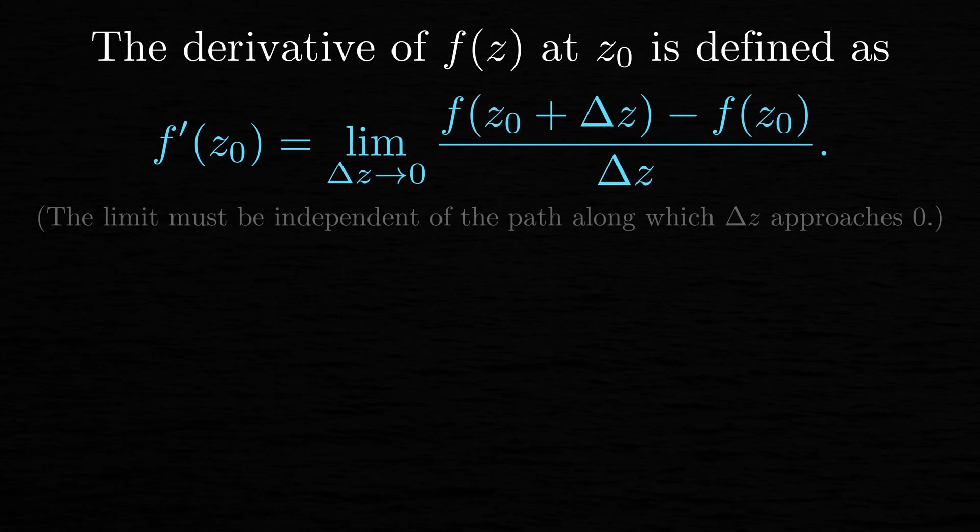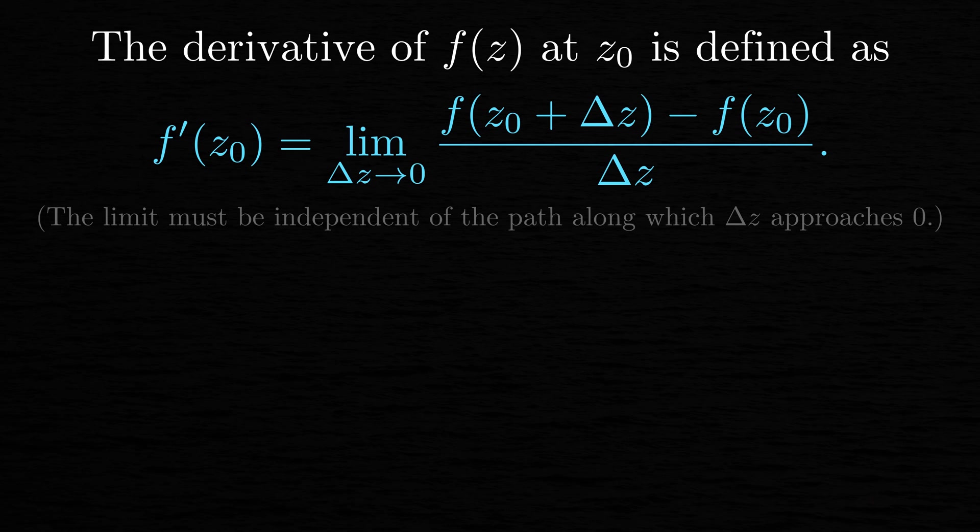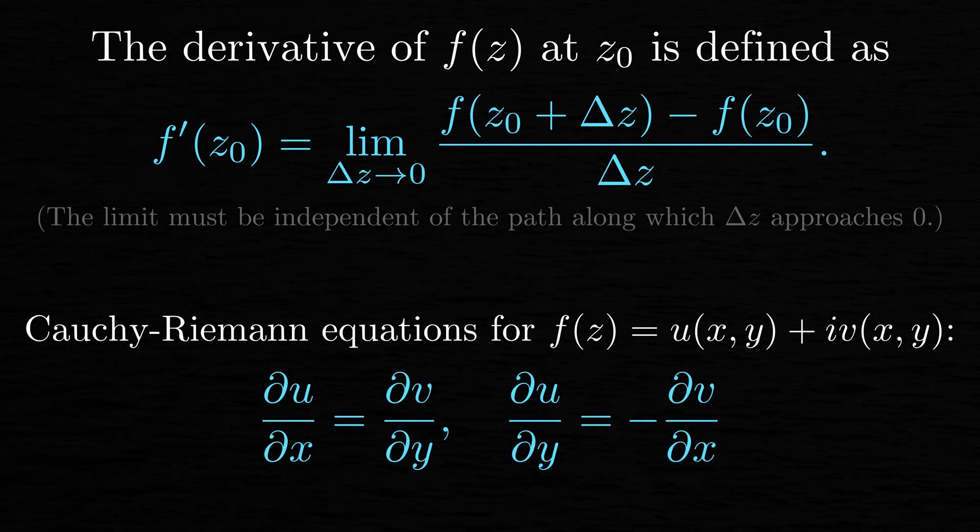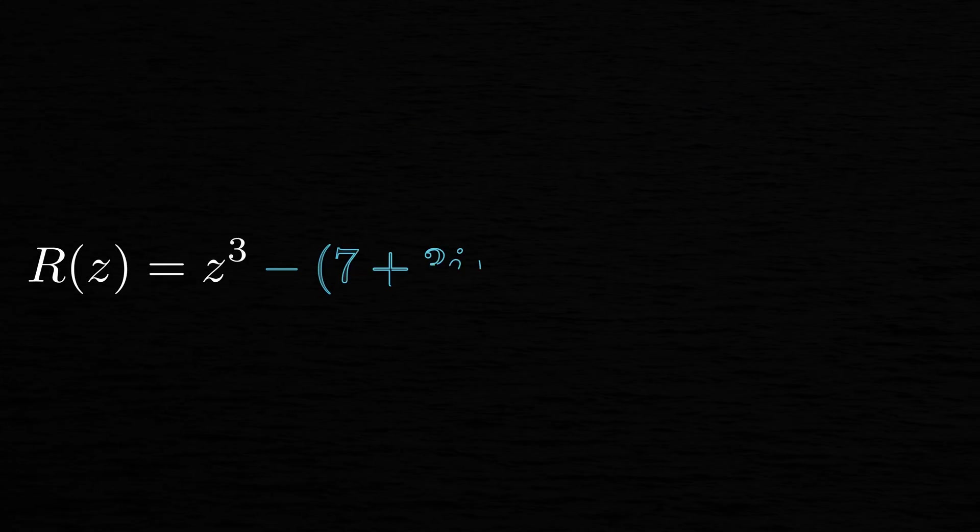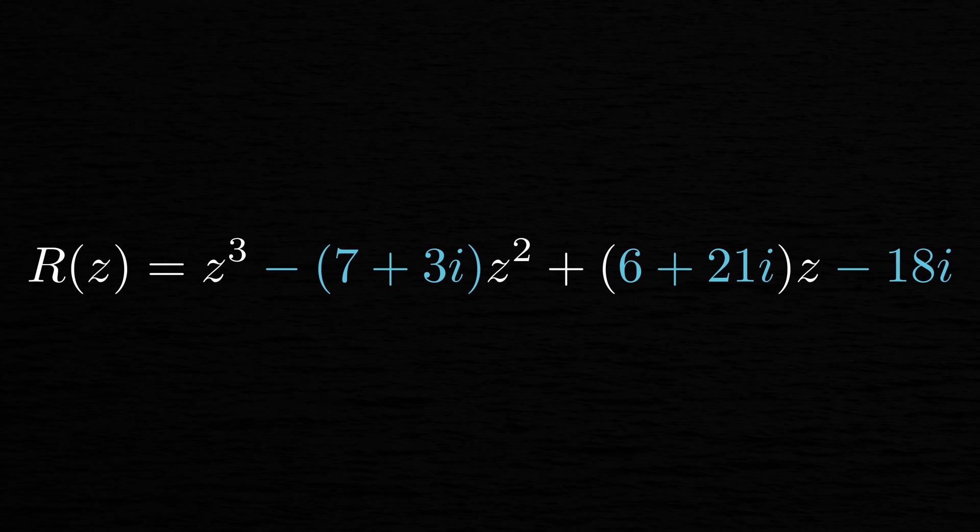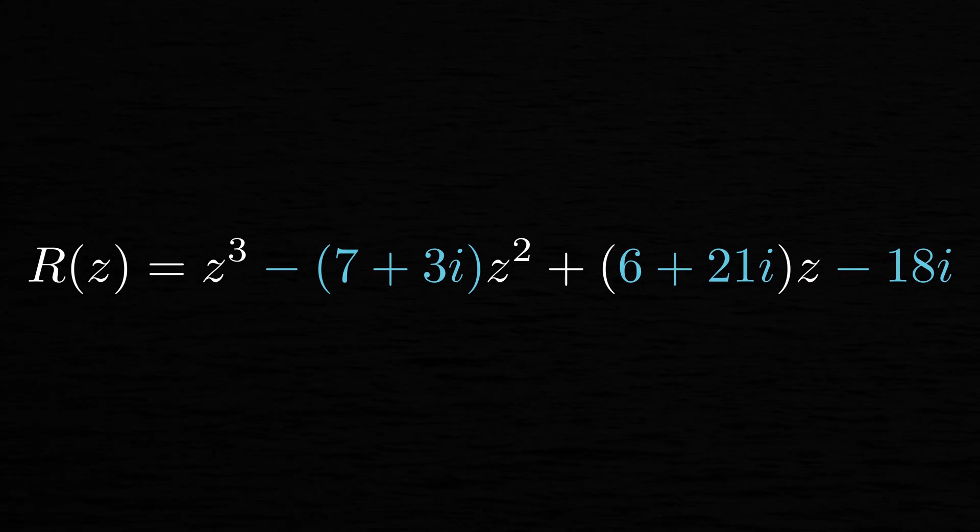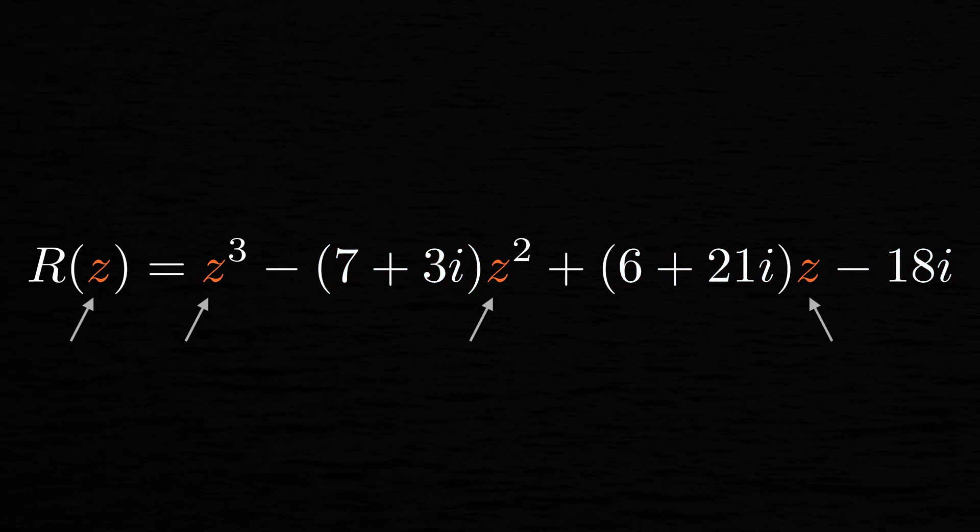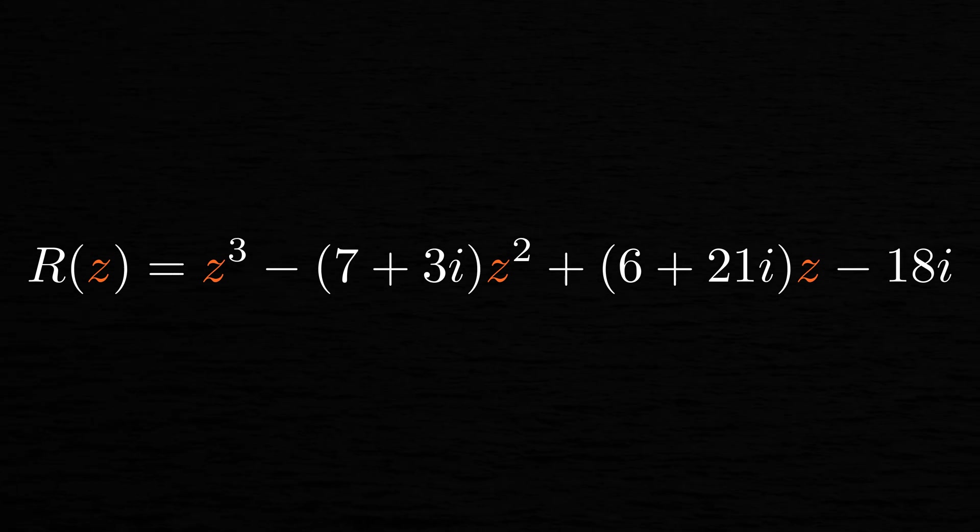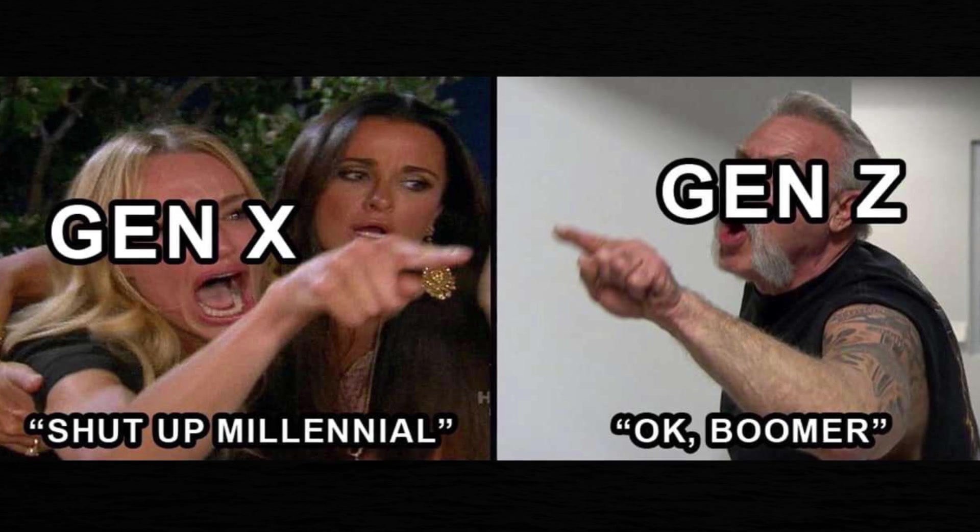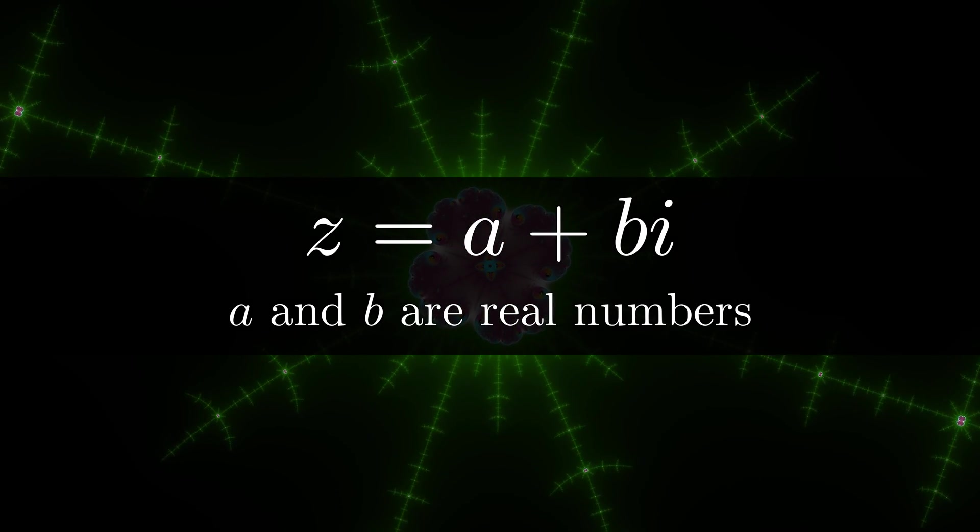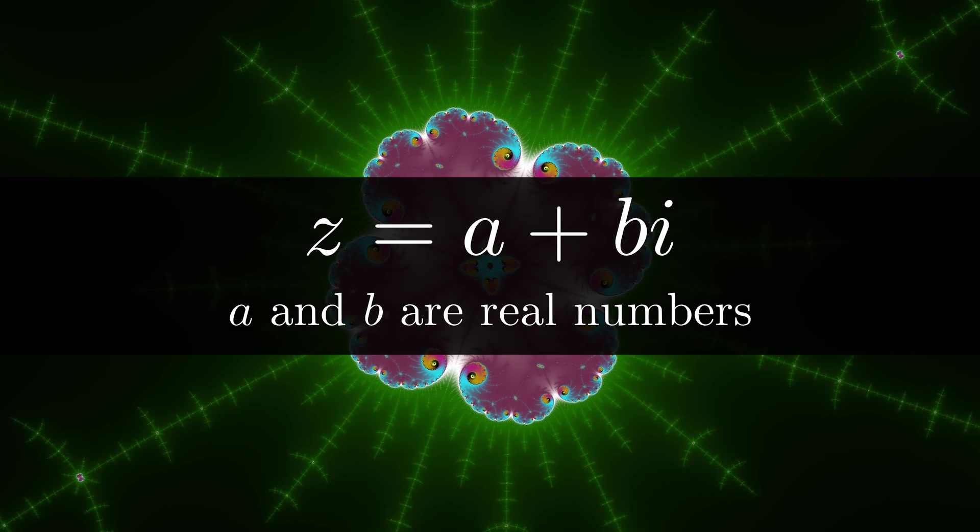If you want the formal details, you should read up on complex differentiable functions and the Cauchy-Riemann equations. Anyway, let's go back to our third degree polynomial r of z with complex coefficients. First off, notice that we're using z instead of the more familiar x in our polynomial because it's conventionally what complex analysts do to emphasize that the variable z is a complex number.